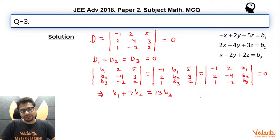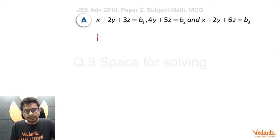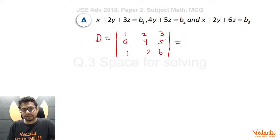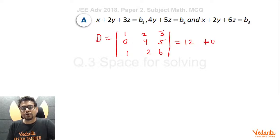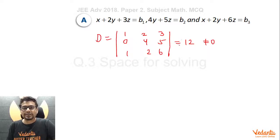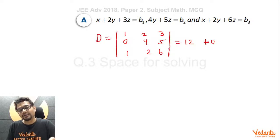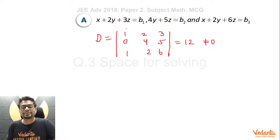Now let's consider the options. For option A, the determinant D formed by the coefficients of x, y, and z as its columns turns out to be 12, which is not zero. So no matter what b1, b2, b3 are, this system of linear equations will always have a unique solution — which means at least one solution — for all column matrices [b1, b2, b3] belonging to set S. So option A is correct.